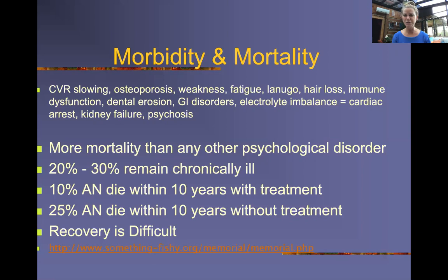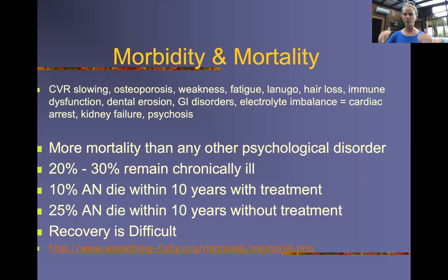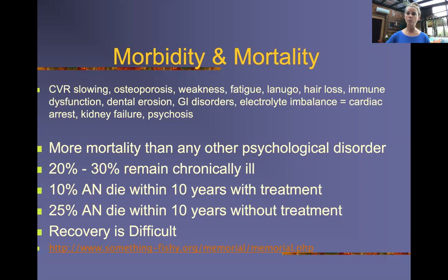I have issues with the way the DSM defined eating disorders, and I have data to justify it. In epidemiological research tracking individuals with anorexia, bulimia, binge eating disorder, and the 'not otherwise specified' category — Eating Disorder NOS — it was actually the Eating Disorder NOS that had the highest crude mortality. The subclinical diagnosis is actually the most dangerous of the eating disorders.